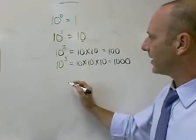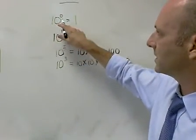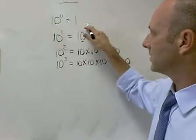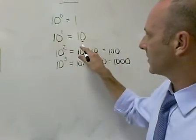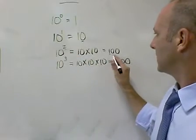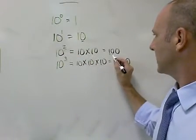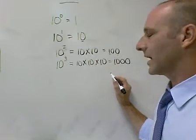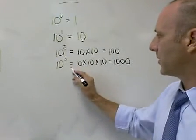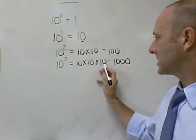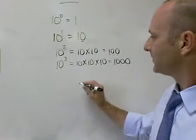Thinking about a couple of other things in our pattern — notice up here: 10 to the 0, there are no zeros in that answer. 10 to the 1st, we've got 1 zero. 10 to the 2nd, we're multiplying 10 times 10, and we've got 2 zeros in our answer of 100. And 10 to the 3rd, multiplying 10 times 10 times 10, we've got 3 zeros in our answer.